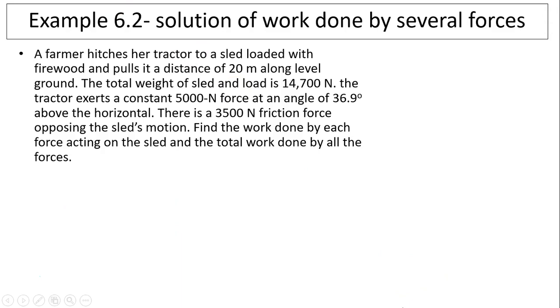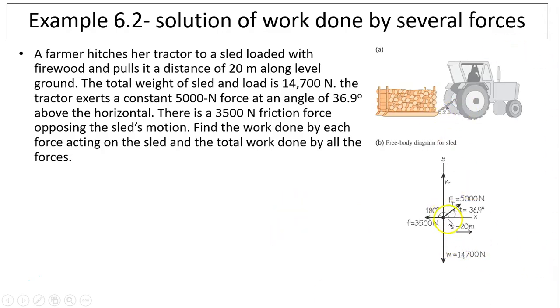Let's take a look at this example. A farmer hitches her tractor to a sled loaded with firewood and pulls it a distance of 20 meters along level ground. The total weight of the sled and load is 14,700 newtons. The tractor exerts a constant 5,000 newton force at an angle of 36.9 degrees above the horizontal. There is a 3,500 newton friction force opposing the sled's motion. Find the work done by each force acting on the sled and the total work done by all the forces. First, you need to draw a picture, then you need to draw a free body diagram. As you can see, the free body diagram has weight, normal force, friction force, and tension force from the tractor exerted on the sled.